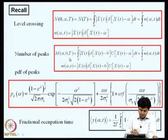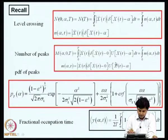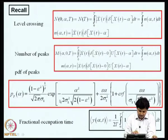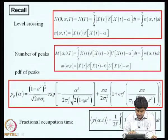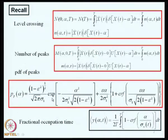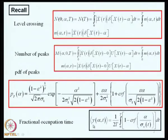We also asked the question on number of peaks above a given level alpha, and again we set up a counter and were able to characterize its properties for Gaussian random processes. Based on certain heuristic assumptions, we also derived the probability density functions of peaks for both narrow banded and broad banded processes. Here, epsilon is a bandwidth parameter that helps us characterize whether the process is narrow banded, broad banded or somewhere in between. We also characterized the fractional occupation time — the fraction of time that a random process spends above a level alpha in a given duration 0 to T — and derived its expected value for a Gaussian random process.